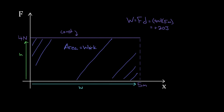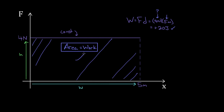You might wonder why you'd ever want to know that work equals the area under a force graph when you can already find it with the formula. Here's why: what if our force was not constant? What if we had a varying force? In that case, what force would you plug into the formula — it'd be changing. One way to handle that is using calculus, but if you don't know calculus, that doesn't help. Fortunately, it turns out the area underneath any force versus position graph equals the work — not just when the force is constant, but even when the force is varying.